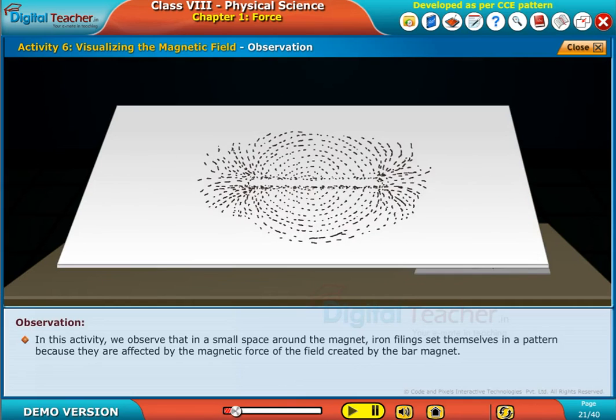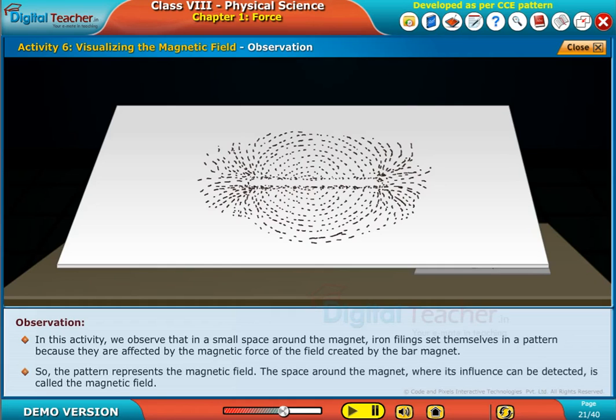In this activity, we observe that in a small space around the magnet, iron filings set themselves in a pattern because they are affected by the magnetic force of the field created by the bar magnet.